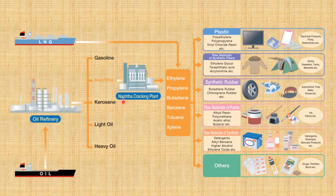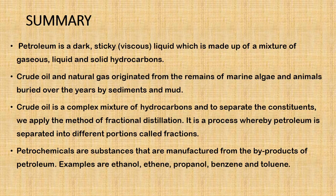Here is how petrochemicals are made. From refineries and liquefied natural gases, and from naphtha — a byproduct of fractional distillation of petroleum — petrochemicals like ethylene, propylene, butadiene, benzene, toluene, and xylene are produced. These petrochemicals are in turn used to produce plastic raw materials, synthetic fiber, synthetic rubber, raw materials of paints, and synthetic substances like detergent. These are then used in making electrical products, film, stationery, shirts, sweaters, tents, blankets, automotive tires, belts, shoes, inks, paints, detergents, shampoos, skincare products, drugs, and fertilizers.